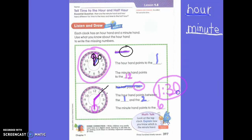So this is how I'm going to write it. When it is pointing to the six, I'm going to write thirty. When it is pointing to the twelve, I'm going to write o'clock. Does everyone see that?